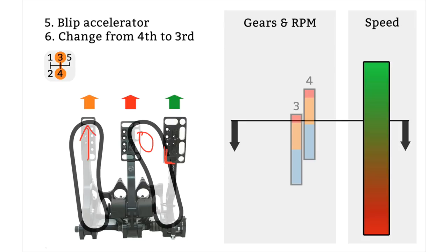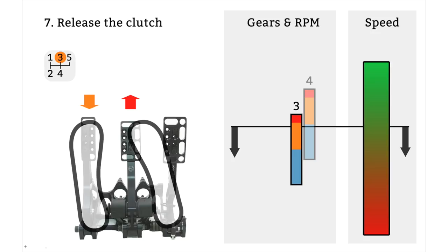So finally we've blipped the accelerator and now it's time to release the clutch. Hopefully the engine speed will match the wheel speed and as we release the clutch we'll have a smooth downshift. We're still on the brakes here and we're still decelerating the RPM and decelerating the speed as we approach the corner. In a few moments now that we've let the clutch out it will be time to begin to release the brakes as we turn the car into the corner and then we'll continue to make our way through and out of the next corner.